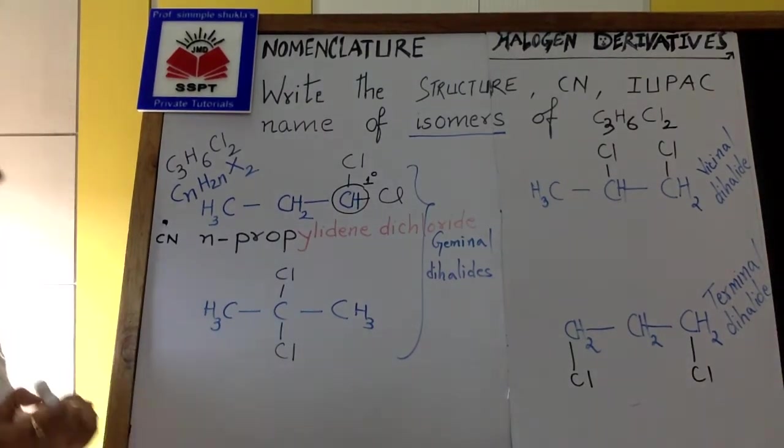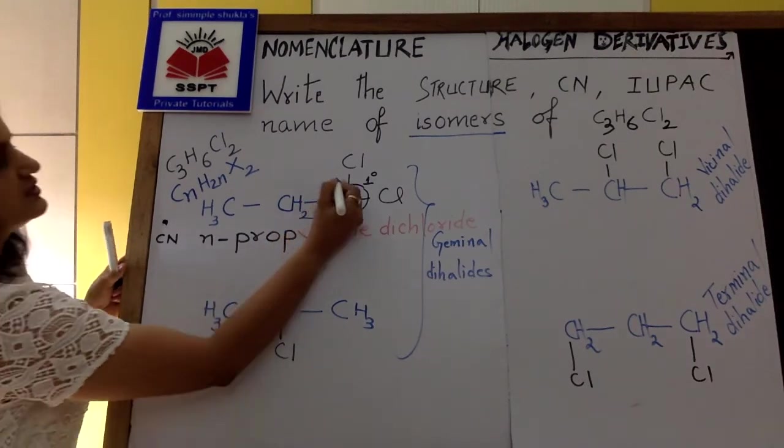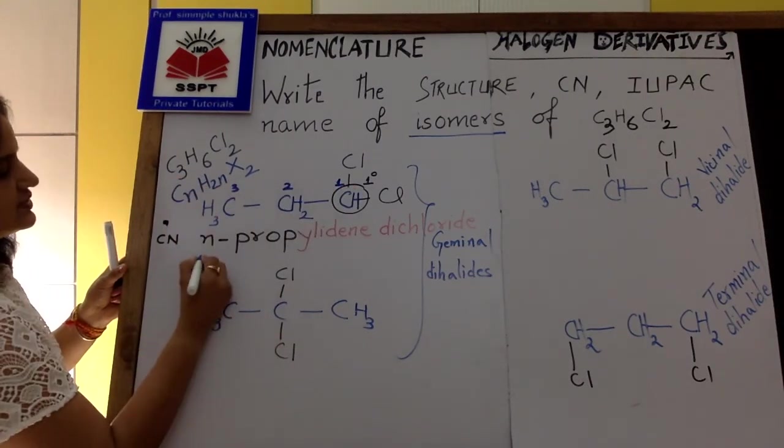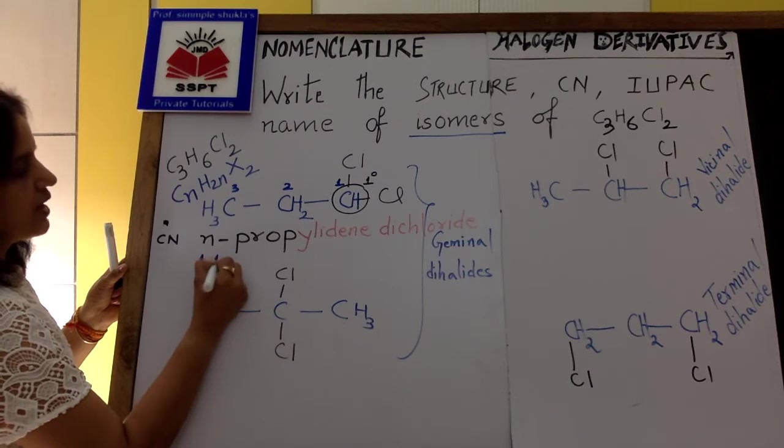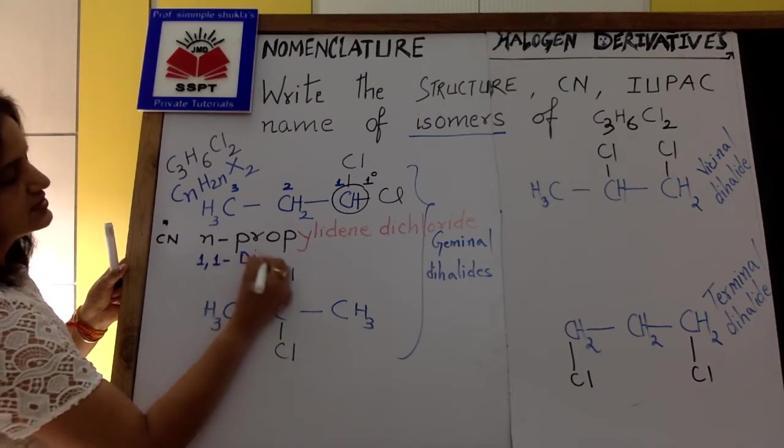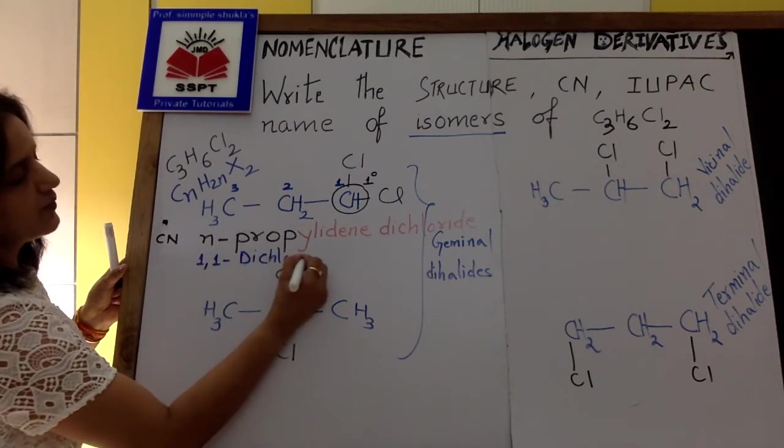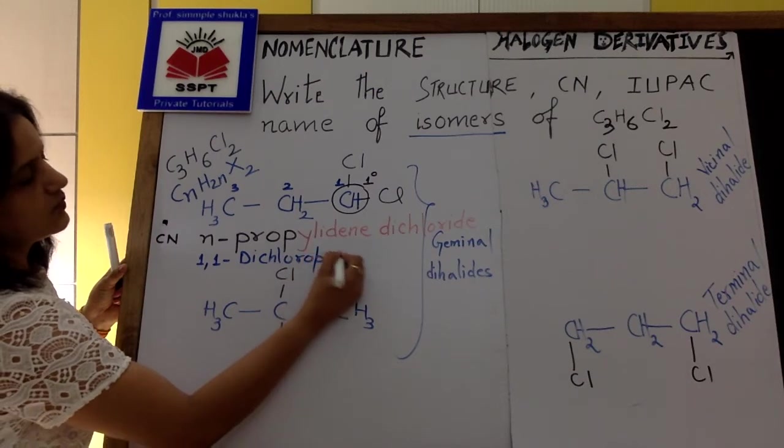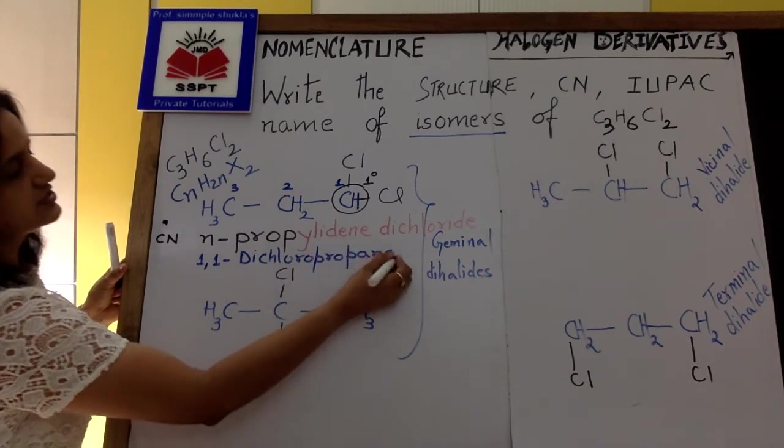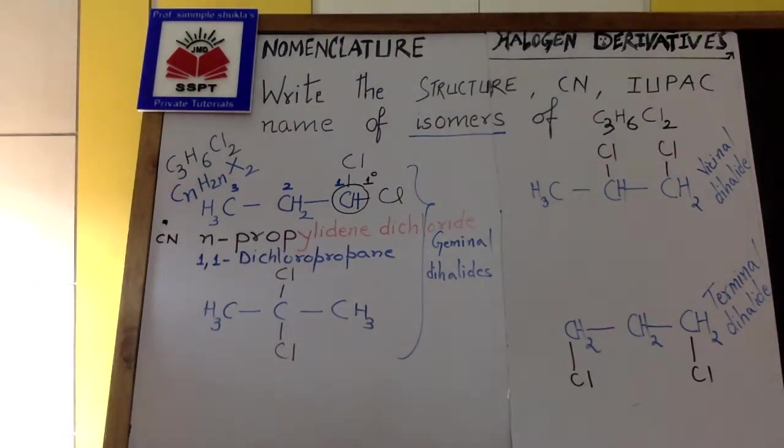Now, how you write the IUPAC name? We select long chain. One, two, three. So that's very simple. 1,1-dichloropropane. 1,1-dichloropropane. Correct? Now, this one.